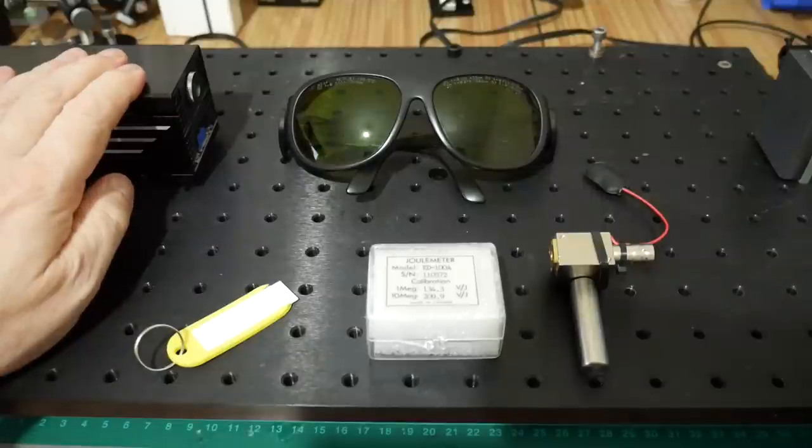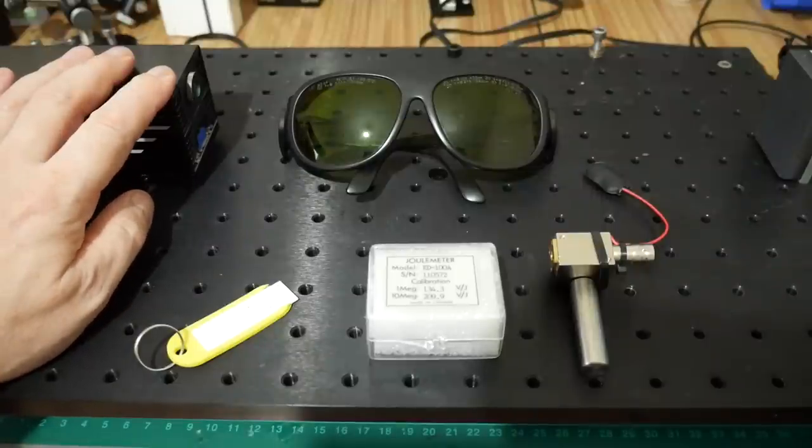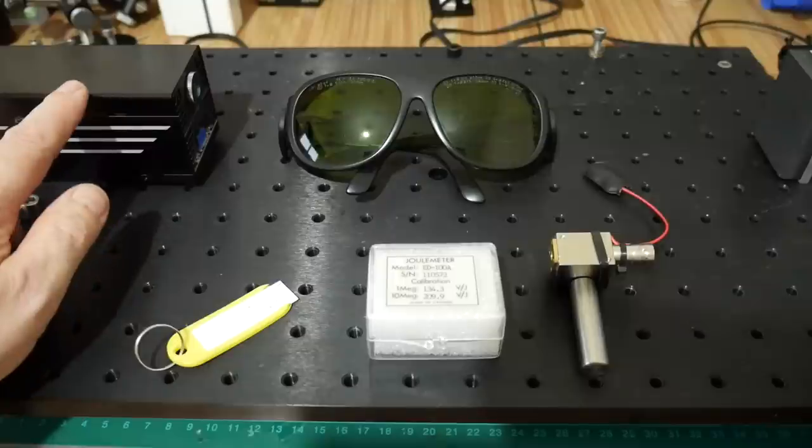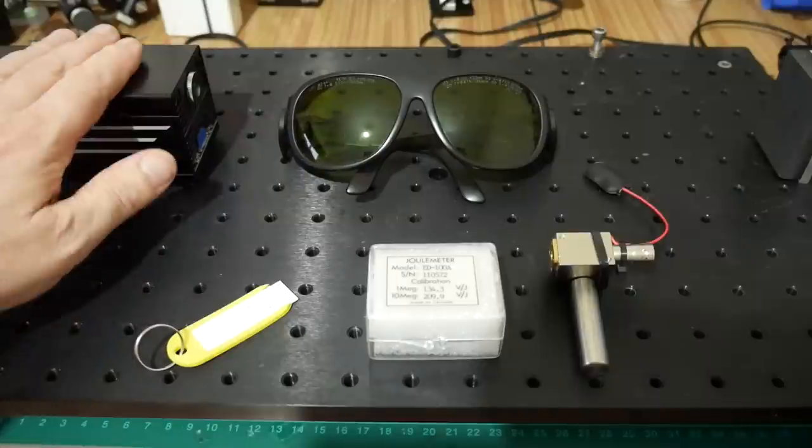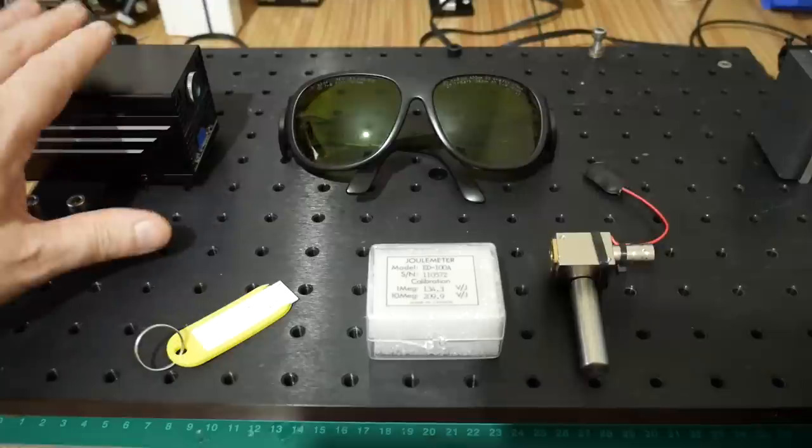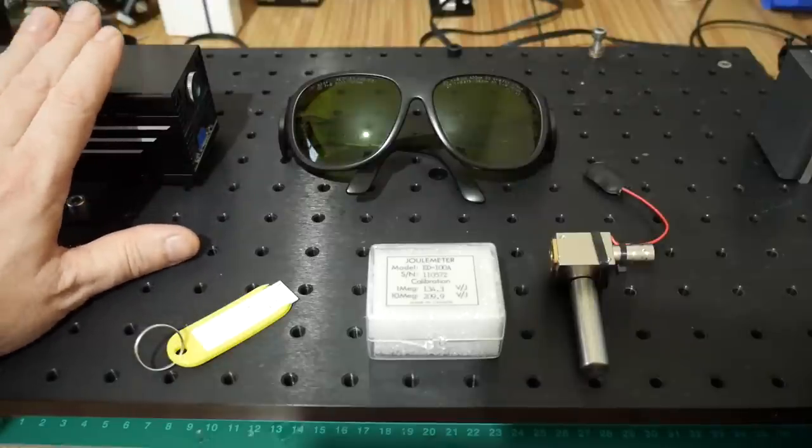When we're measuring a pulse solid state laser like this there are a few things we have to bear in mind. The first and foremost is obviously safety and to that end the very first job that I've done with this laser is to build an aluminum plate for it. This is actually bolted onto the bottom of the laser module so I can bolt it to an optical bench. That way I have a nice stable setup where the laser can't possibly move around if you accidentally knock it or anything like that.